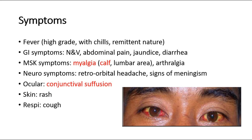The symptoms include high-grade fever with chills and rigor, which is remittent in nature. The patient could also complain of gastrointestinal symptoms such as nausea and vomiting, abdominal pain, jaundice, and diarrhea. Musculoskeletal symptoms like myalgia, especially at the calf region, is an important symptom to note in Leptospirosis, as well as arthralgia.